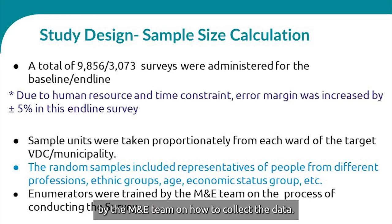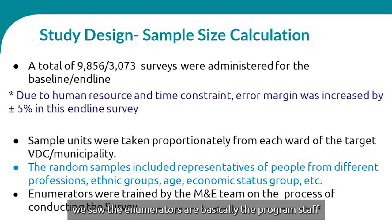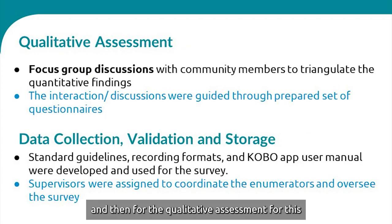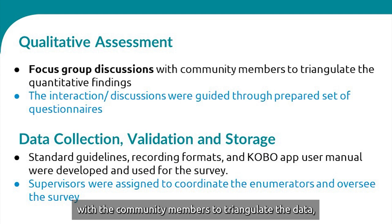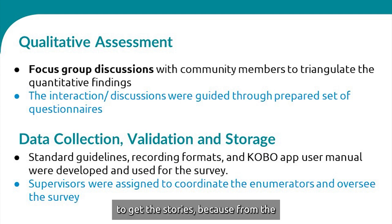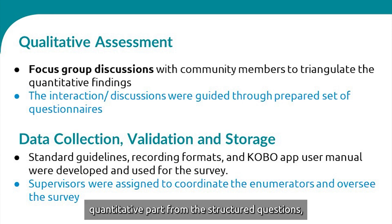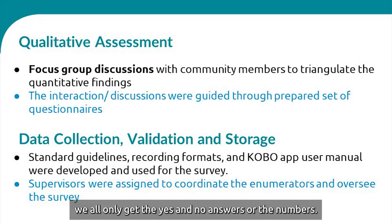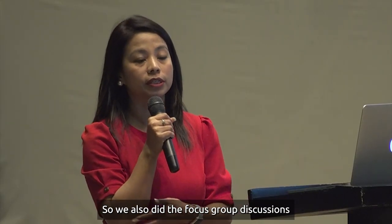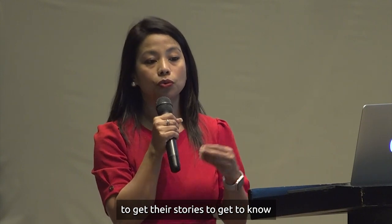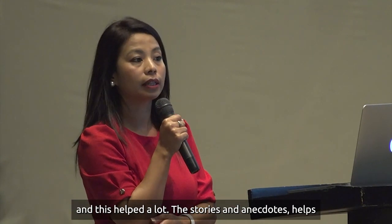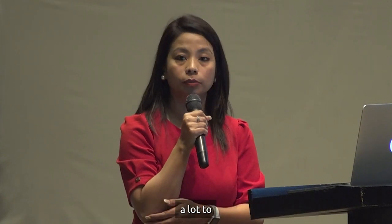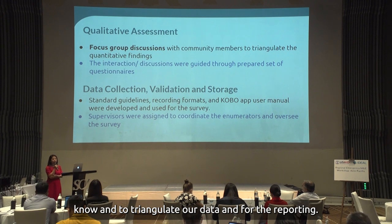Enumerators — basically program staff — were trained by the M&E team on how to collect data and use the data collection tools. For qualitative assessment, we conducted focus group discussions with community members to triangulate the data and collect stories, because from structured questions we only get yes/no answers or numbers. Focus group discussions helped us get stories about how beneficiaries benefited from the program, what challenges they faced, and to triangulate our data for further reporting.